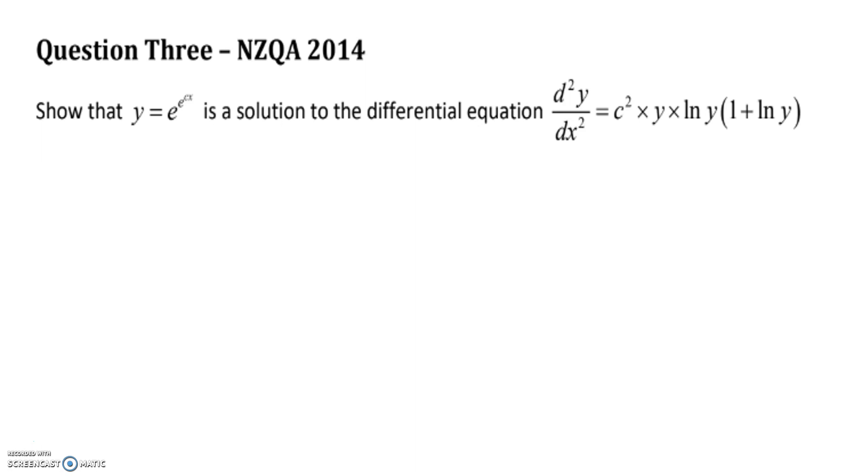So this looks quite difficult, but it's actually only about a six-line question. What we have to do is show that this value of y, or this function, so y is equal to e to the power of e to the power of cx, is a solution to the following differential equation.